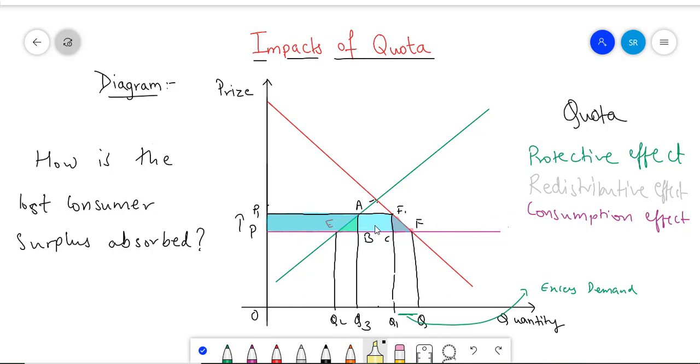However, in the previous video, the rectangle A, B, C, F1 was the revenue effect to the government because at that time the government was charging a tariff. However, here, there is a quota, hence the government isn't getting any revenue. So, how is this loss of consumer surplus being absorbed? And who is the one who benefits out of it?